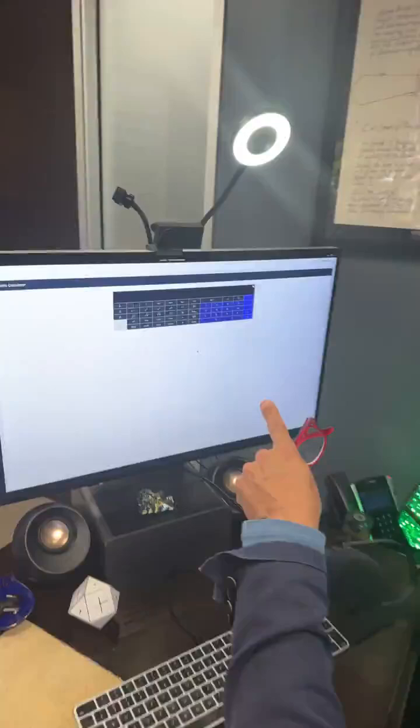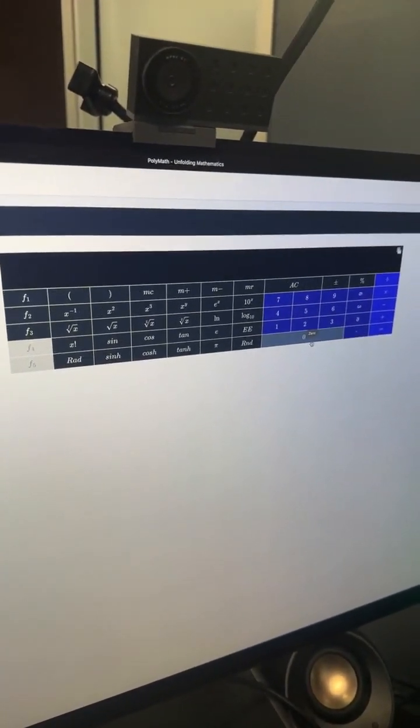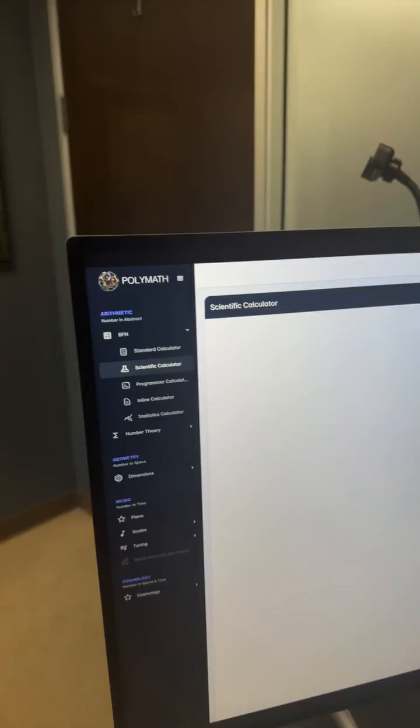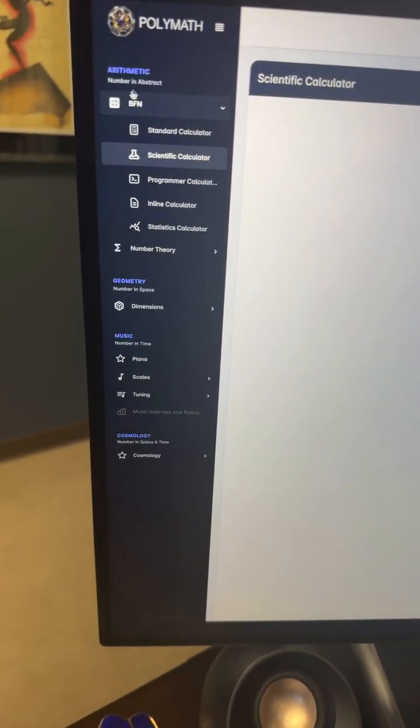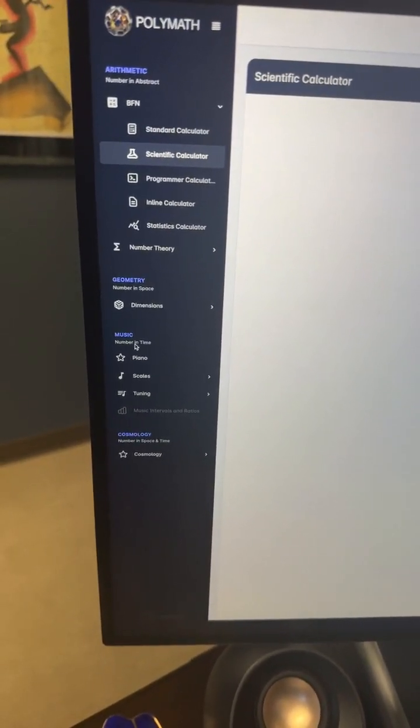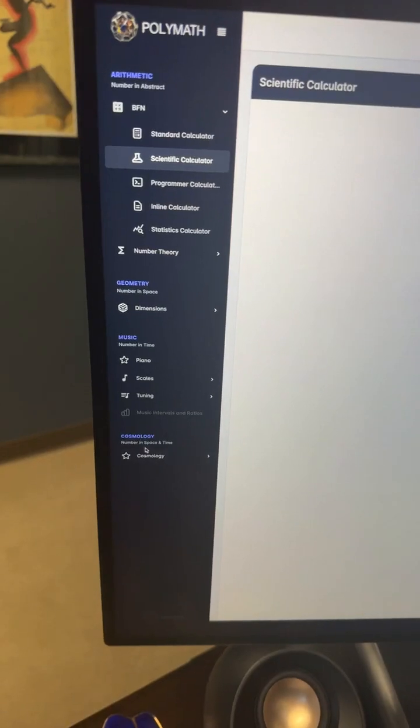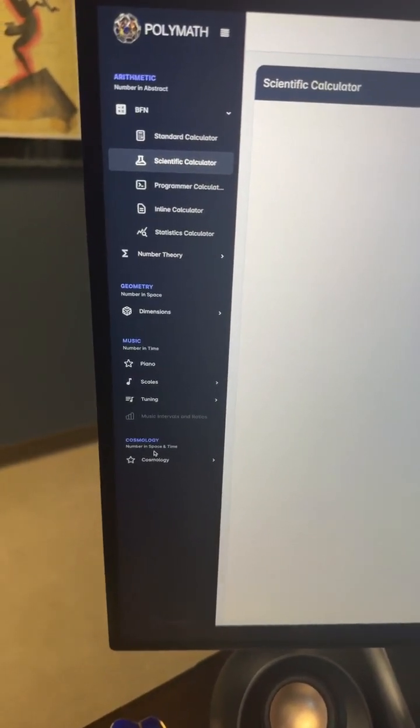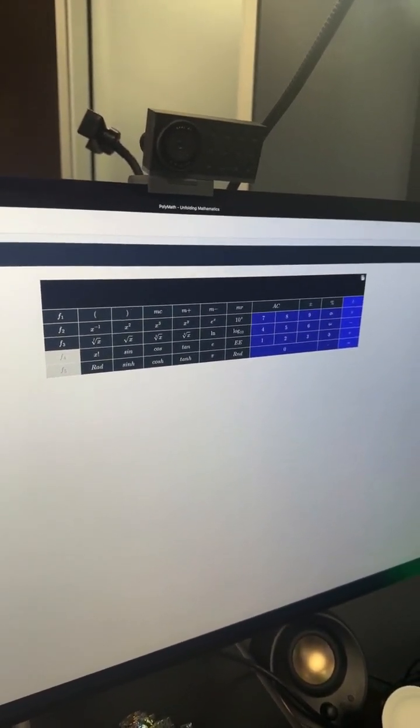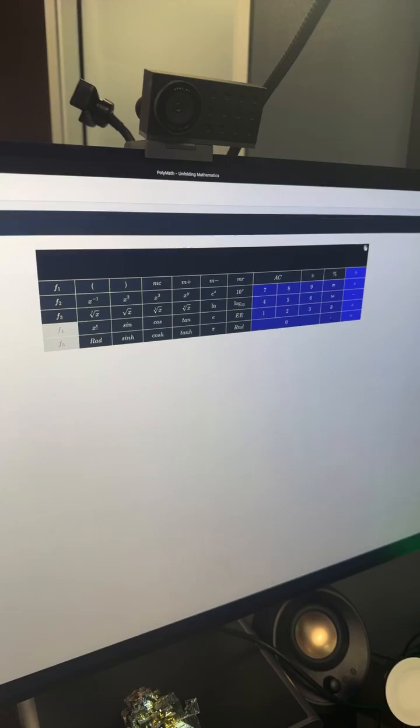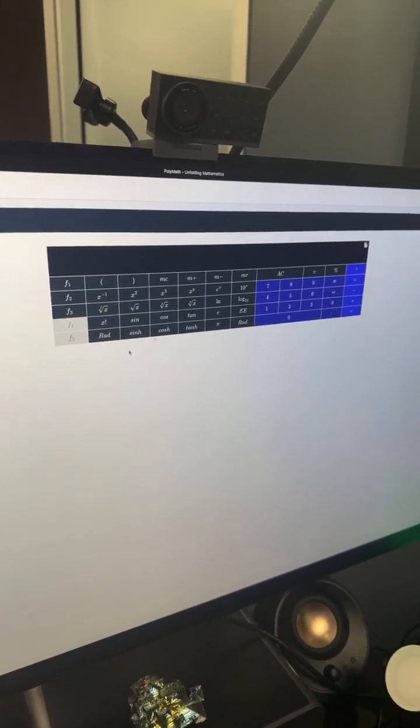So let's take it to my computer so you can see this, and I'll just repeat the same function. So this is my trusty Polymath calculator, which you can see actually created the largest number calculator that exists in the world. And this is actually broken down into arithmetic, which is number and abstract, number and space for geometry, number and time for music, and number and space and time for cosmology. It's actually like the quadrivium. Pretty cool, right? And it's actually got a lot of mathematical discovery embedded within it, and it's its own self-evident proof.